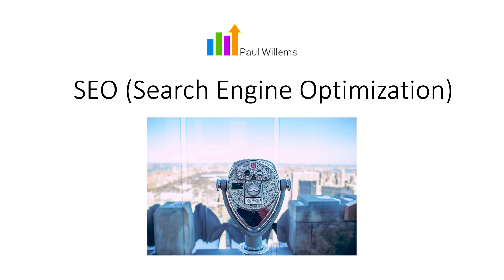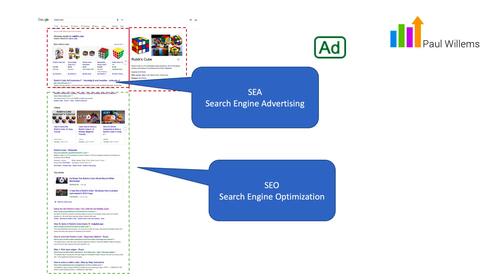Let's talk about how you can benefit from SEO for your website. First of all, let's talk about Google — everybody uses Google nowadays. If you do a search on Google, which I did here on the words 'Rubik's cube,' I got over 33 million results, and that's a lot.